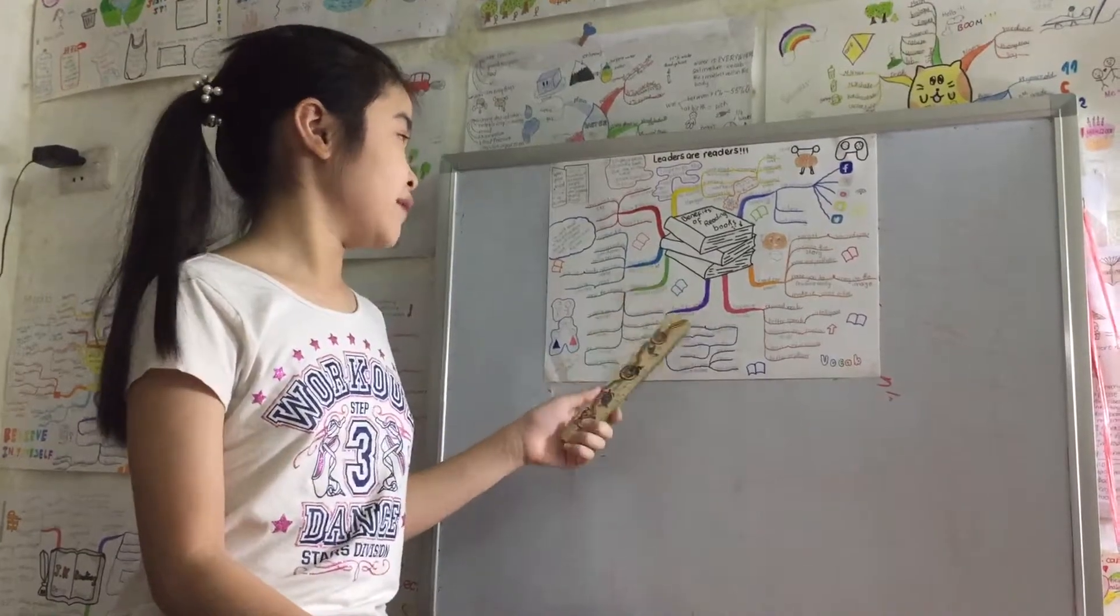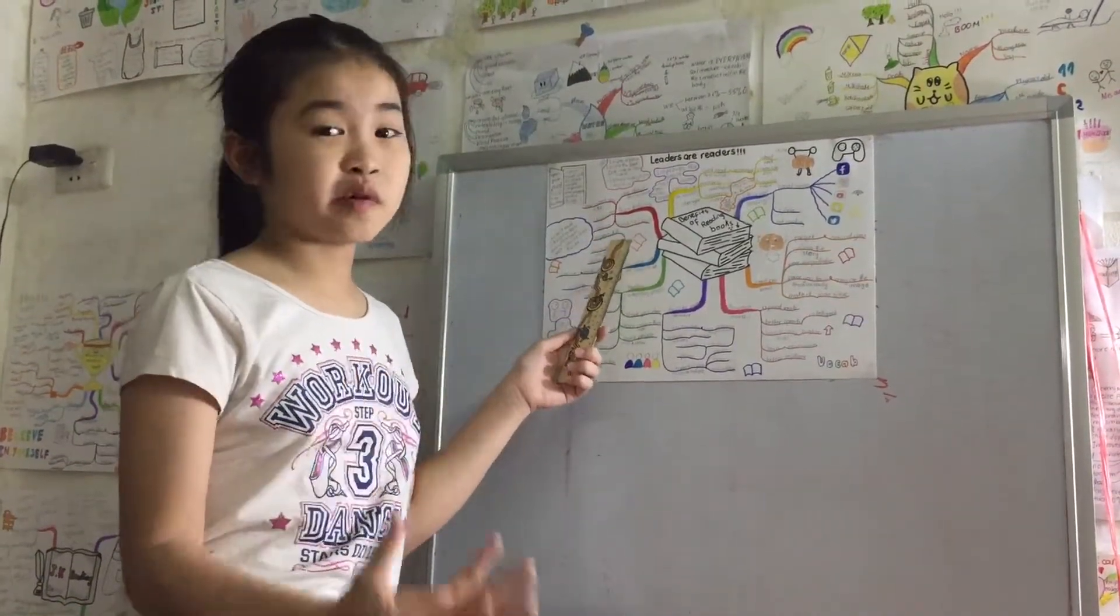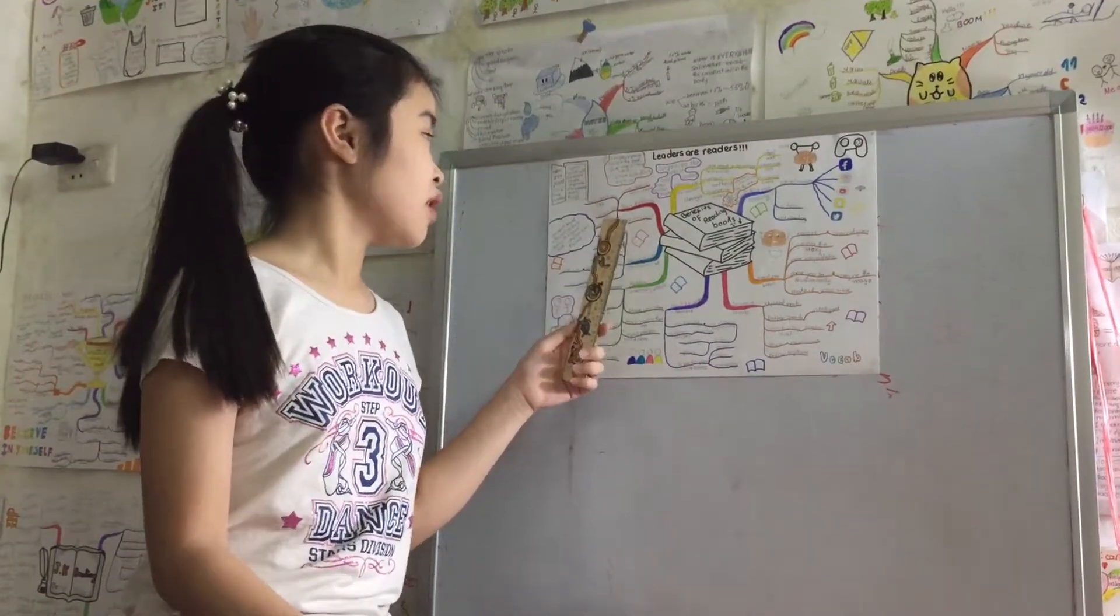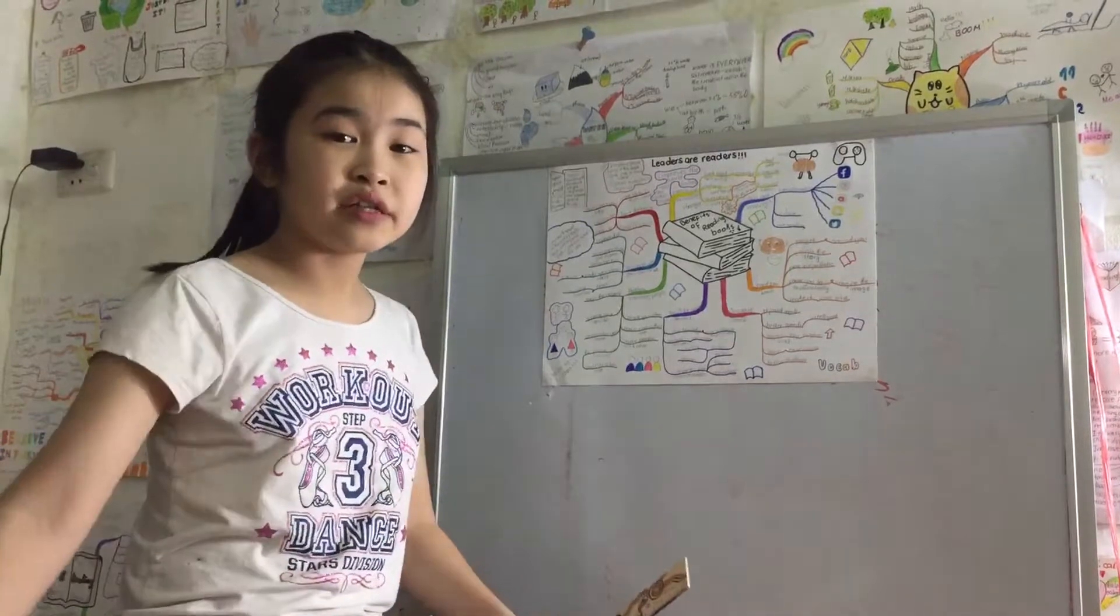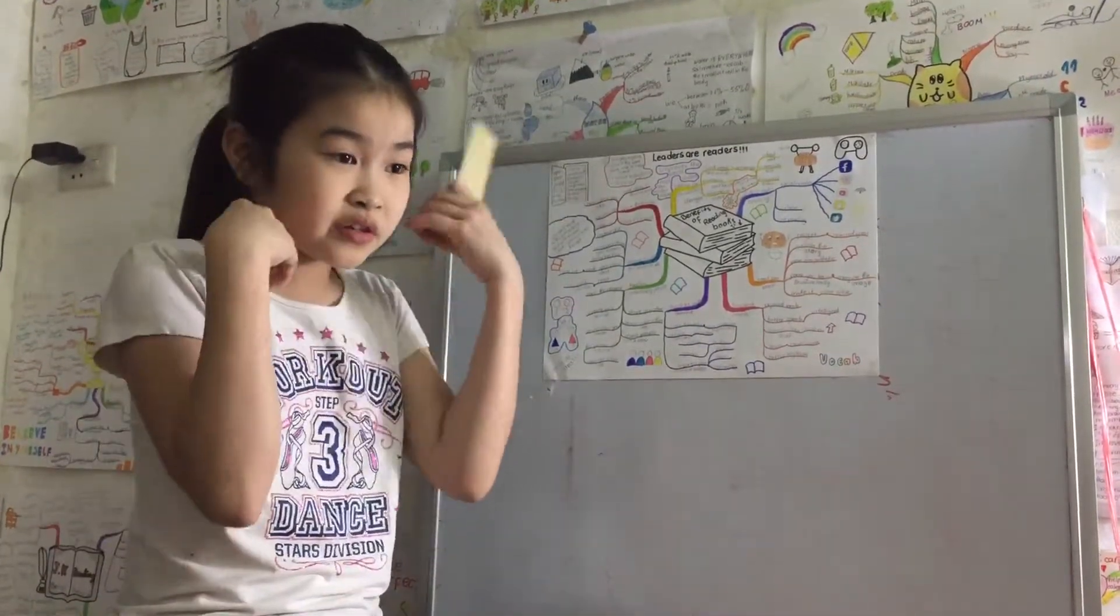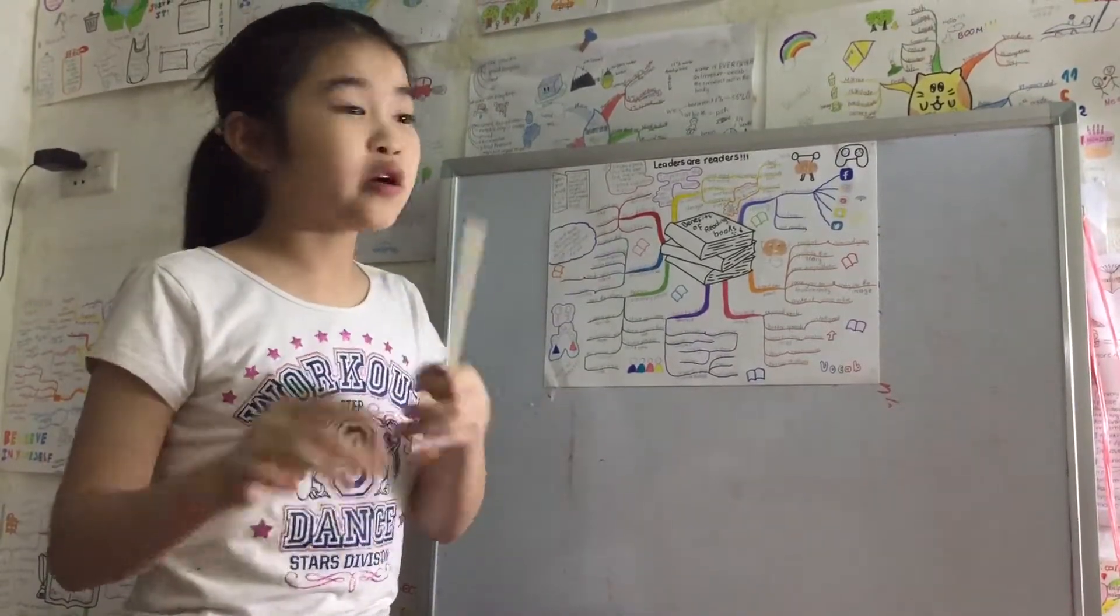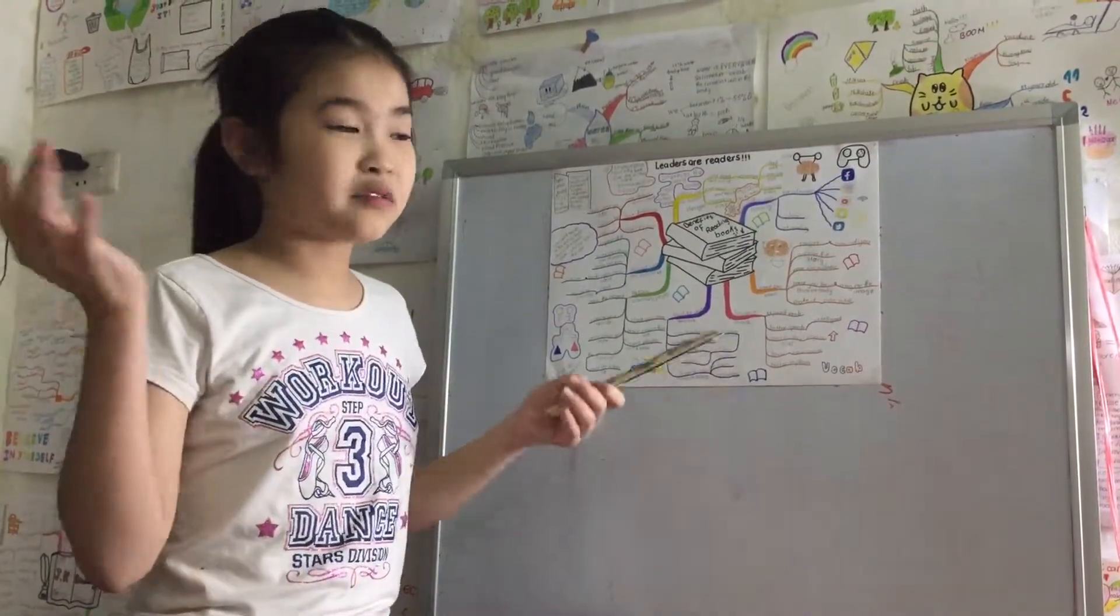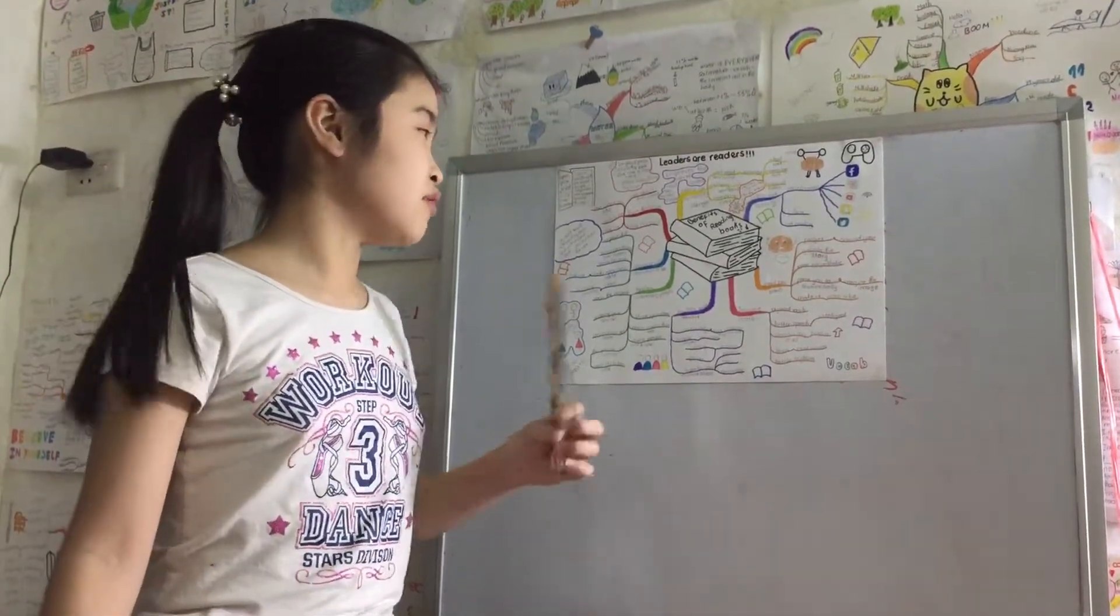Next is become who you should be. In reading books, you can improve your skill. You can experience the things that you dream, like going to ancient Egypt or going to America. You don't need to go there in real life. Maybe you could just read it and know what it's like without even going there in real life.